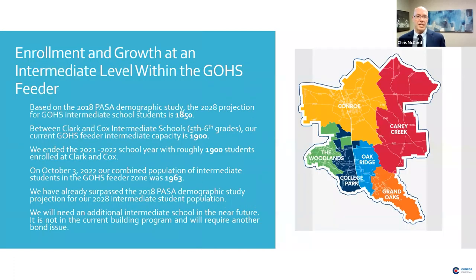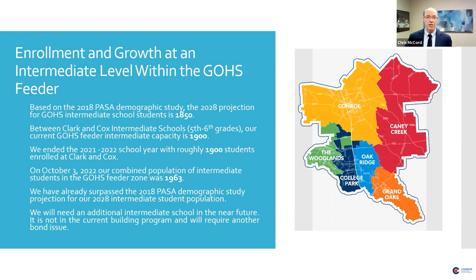At the intermediate level, the 2018 demographic study projected 1,850 intermediate students in Grand Oaks by 2028. Between Clark and Cox, we can house a population of 1,900 kids. We ended last year with roughly that number, and yesterday we had 1,963 students combined between Clark and Cox — already exceeding what was projected for 2028. We know we'll need an additional intermediate school in the relatively near future to house students in the fast-growing Grand Oaks area.